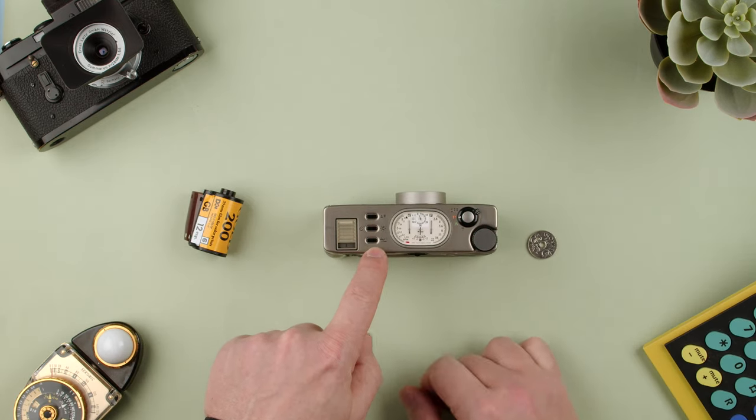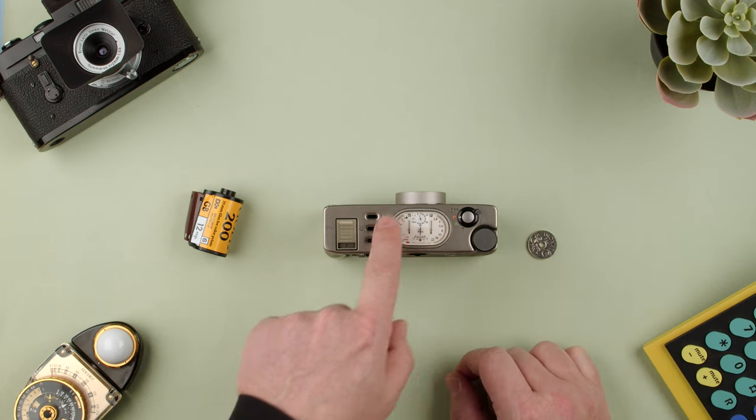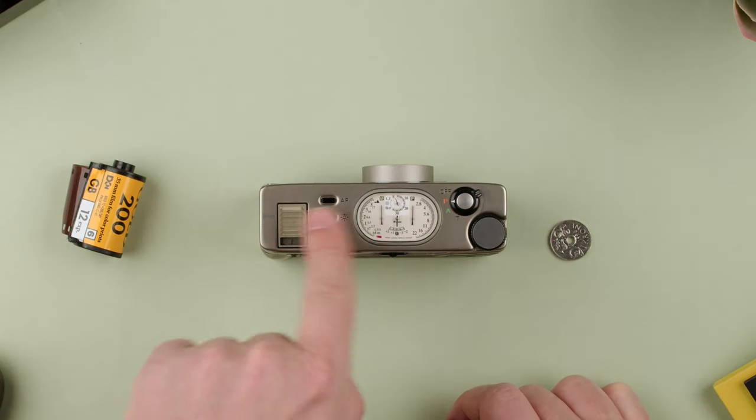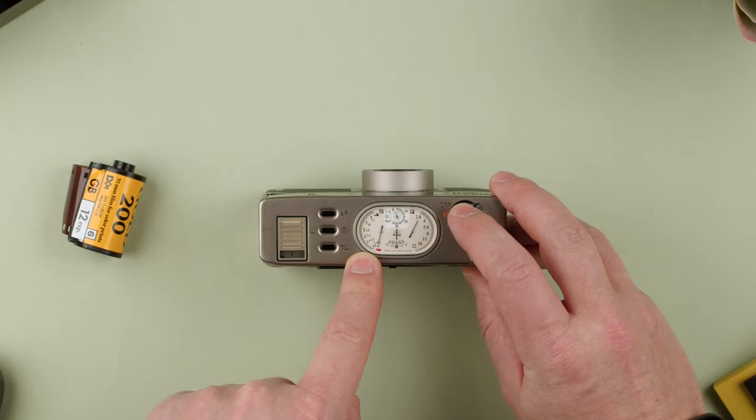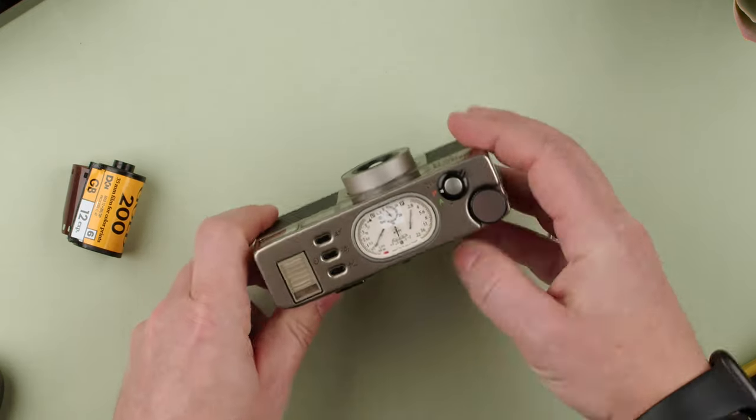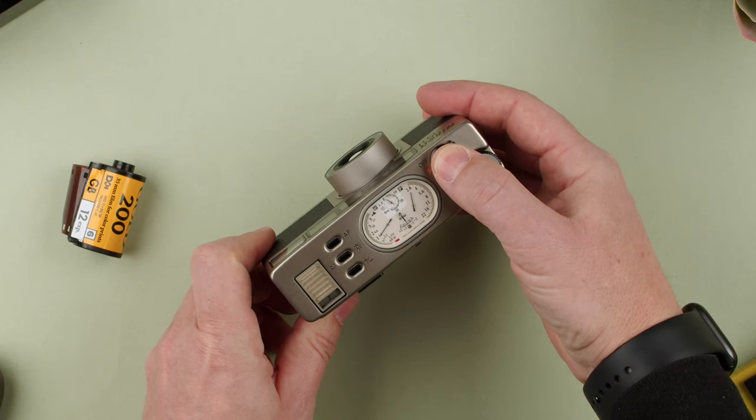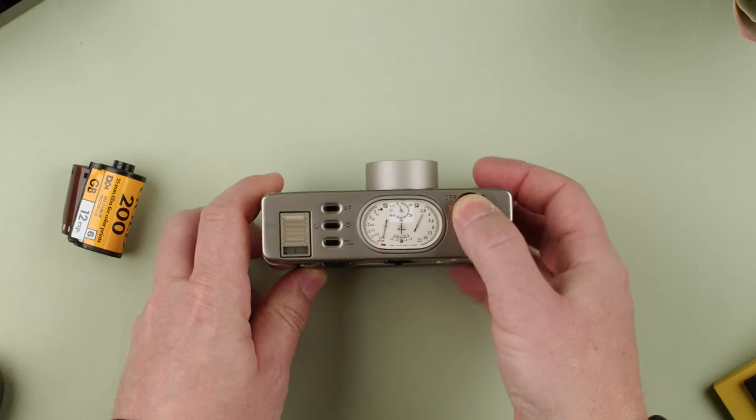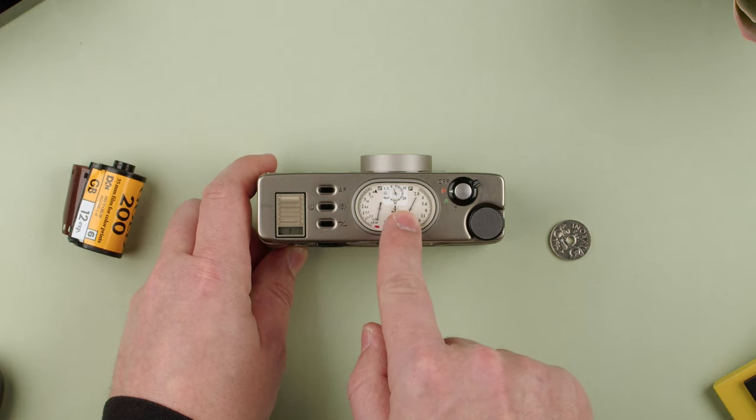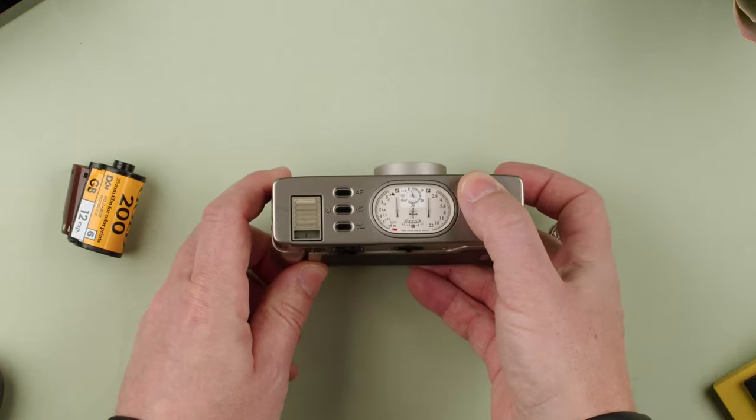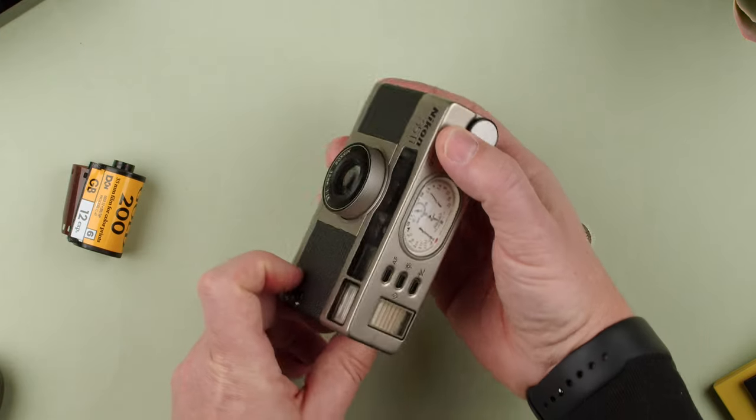We have plus-minus exposure compensation and the analog dial. On the left side, we have the distance as it focuses. If I press, that's very close by. If I focus further out, you see it changes. On the right is the aperture scale. 2.8 is the aperture. If I point to something dark, it's 2.8, but if I point to the lights, it changes to 5.6.